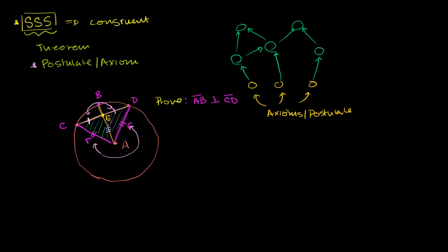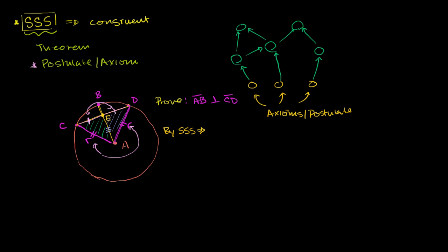This side is equivalent to this side, this side is equal in length to that side, and AE is equivalent to itself as the corresponding shared side on both triangles. So by side-side-side, we know that triangle AEC is congruent to triangle AED.